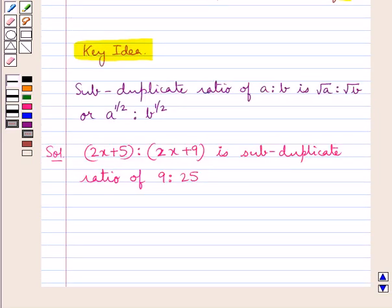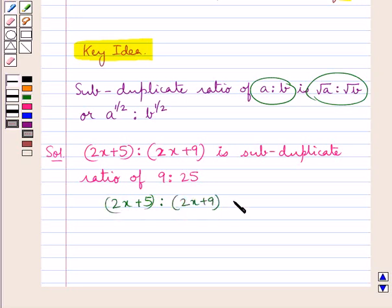Now, from the key idea we have that the subduplicate ratio of A:B is √A : √B. So using this key idea, we get (2x + 5) : (2x + 9) = √9 : √25.